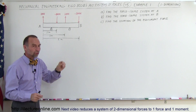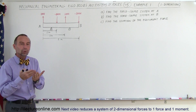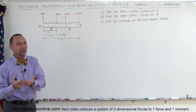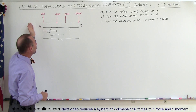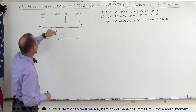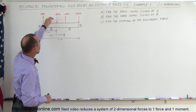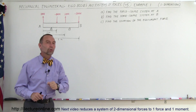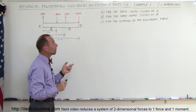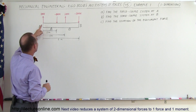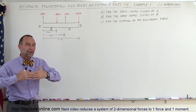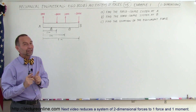We have a beam supported by two supports — where the supports are placed does not matter for finding the moment about any point. The beam is subjected to forces: a 100 Newton force acting upward, an 800 Newton force acting downward, a 200 Newton force acting up, and a 300 Newton force acting down at particular positions relative to the left side of the beam. We want to find the force-couple system at A, the equivalent force and moment at B, and the location of a single equivalent force where the moment is eliminated.